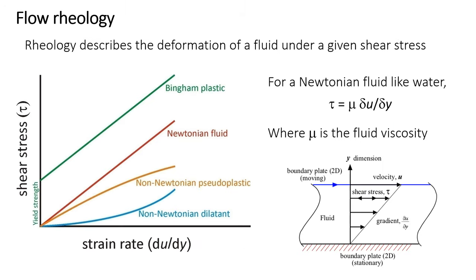Rheology describes the deformation or flow of a material under a given shear stress. Imagine a fluid like water confined in a thin layer between two solid plates. If the top plate moves to the side in a shearing motion, friction at the contact with the fluid will drag that fluid along, while the fluid next to the stationary bottom plate won't move. This creates a velocity gradient, du/dy, analogous to the boundary layer on the bottom of a river. The velocity gradient can be thought of as a strain rate — the amount of deformation per time. The size of the velocity gradient for a given shear stress is governed by the viscosity of the fluid, mu. Fluids with higher viscosity, like honey or molasses, will deform very little for a given shear stress, but low viscosity fluids like water will flow a lot for that same shear stress.